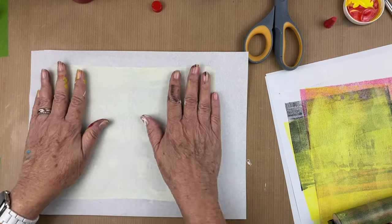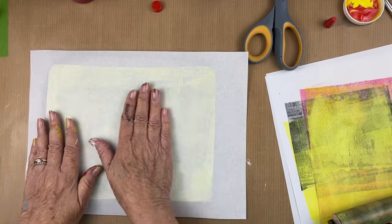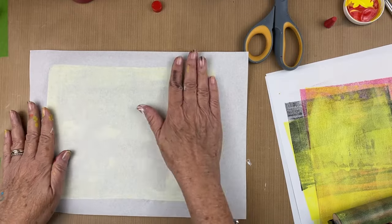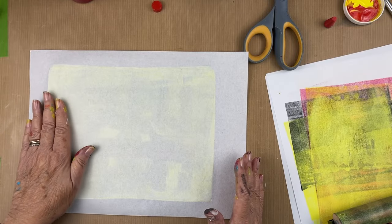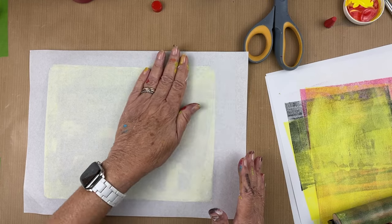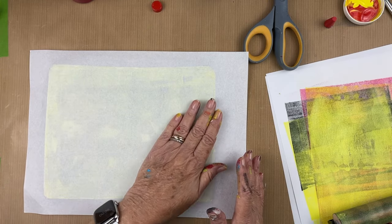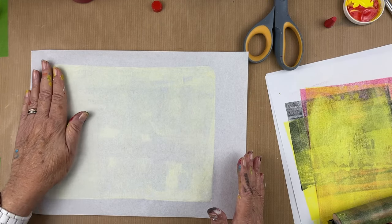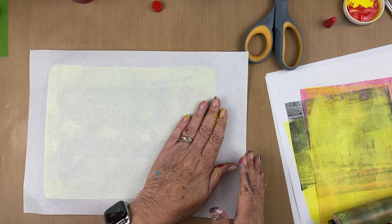I'm curious what this yellow is going to do to the transparent quinacridone red, but also in the areas where we stamped, the yellow is going to show through 100%. I think this is going to be a nice print.